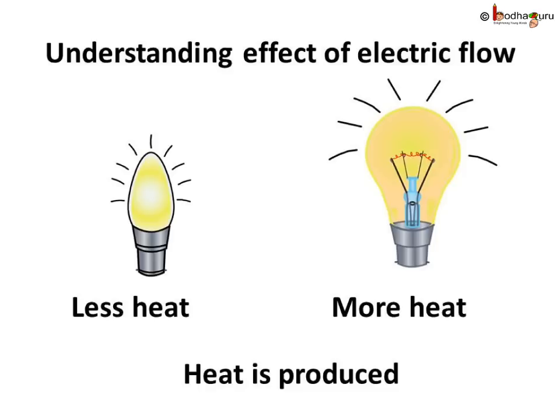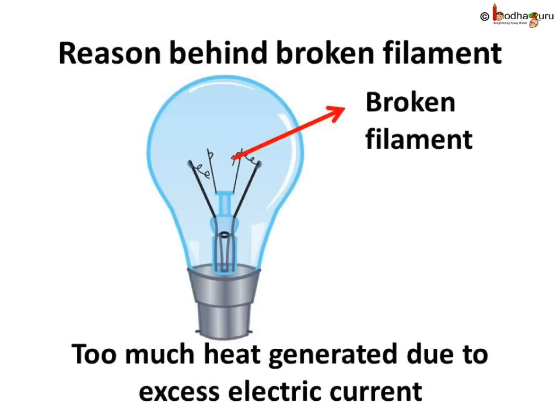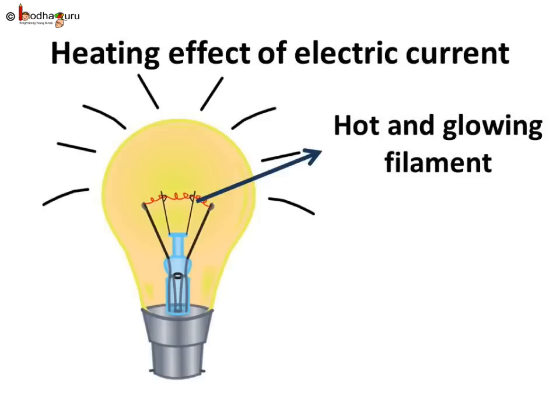Small bulbs used in night lamps give less light and become less hot. Bigger light bulbs get hotter when glowing and also give more light. So, electricity must be creating this heat — more electric current means more heat. If the flow of current increases, more and more heat will be produced. Can too much electric current flowing through the filament create lots of heat and damage it — even burn the small filament inside the bulb? The wire gets hot when an electric current passes through it. This is the heating effect of the electric current.